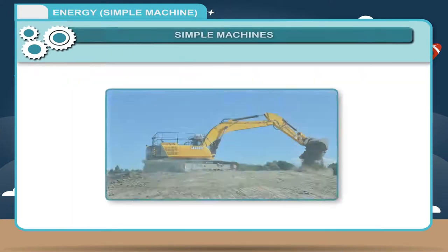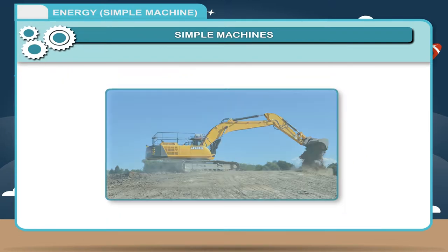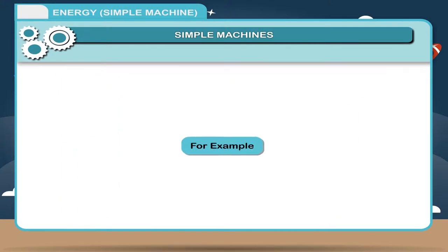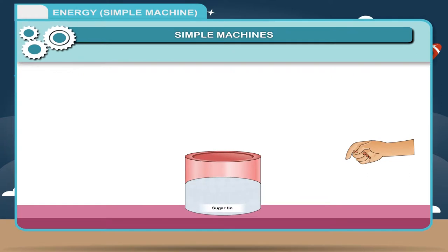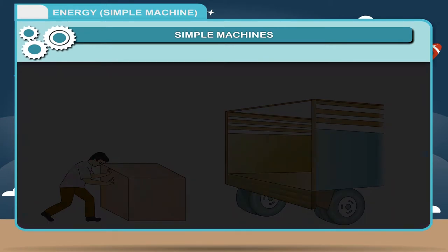Simple Machines: A machine is a device that makes work easier and faster. Machine helps us to increase the efficiency to work. For example, if we have to open the lid of a sugar tin, we may do it with bare hands. If we take a small spoon and insert it between the lid and the edge of the tin, it will open easily.